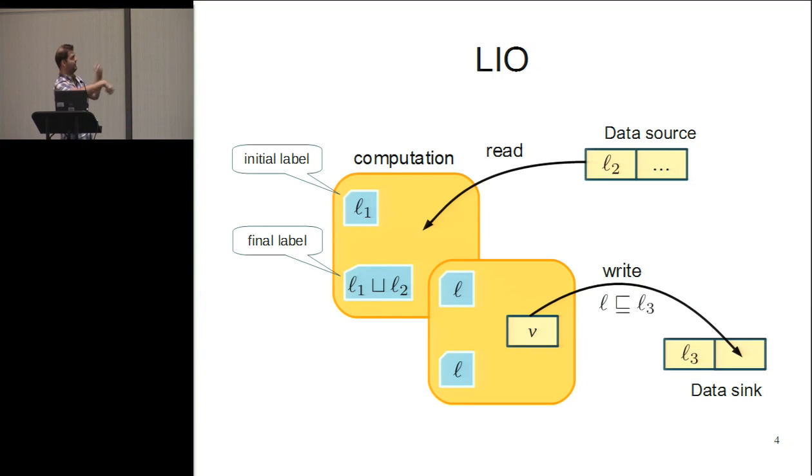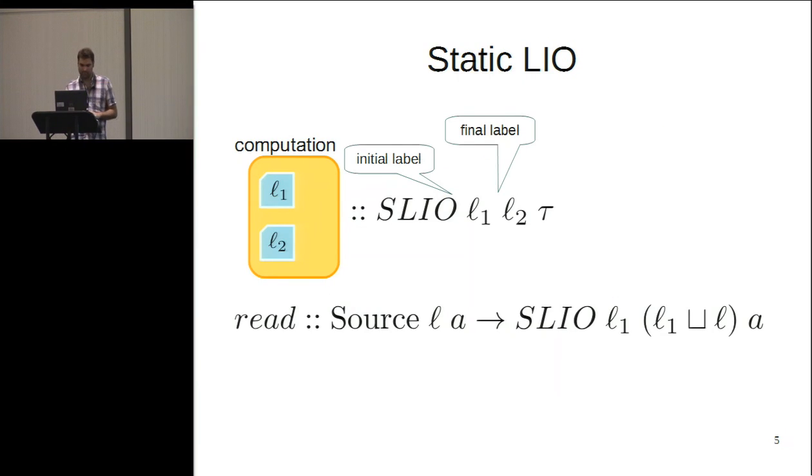And this is all we need to actually enforce the property I was talking about. Of course, we can combine read and write operations arbitrarily. This is very coarse-grained and it might seem too restrictive. There are ways of making it more expressive, but they're not really important for our purposes. So, what we set out to do is to encode this kind of enforcement in Haskell's type system.